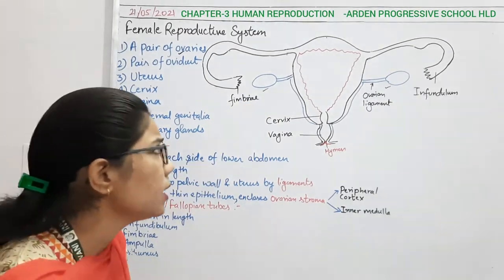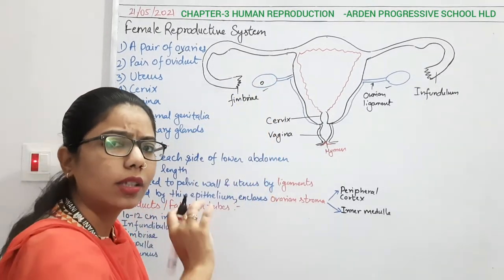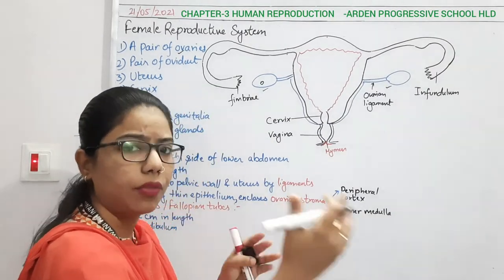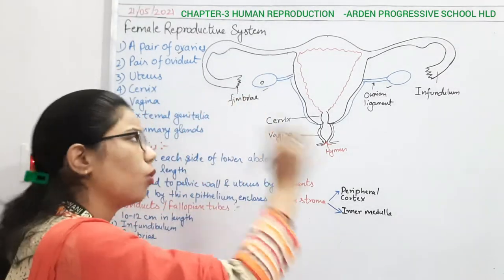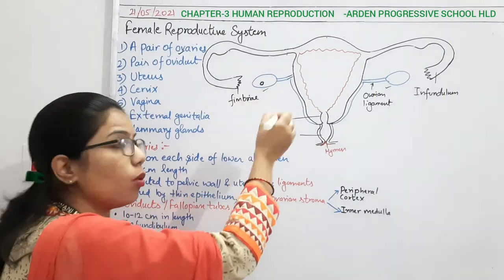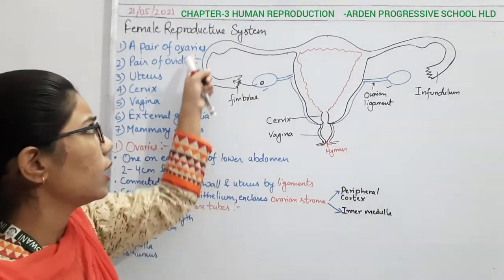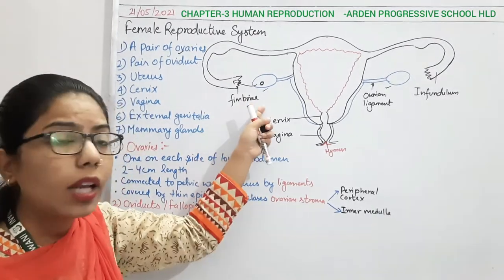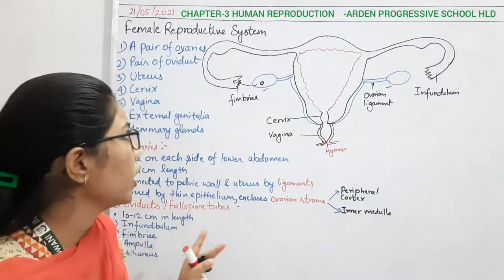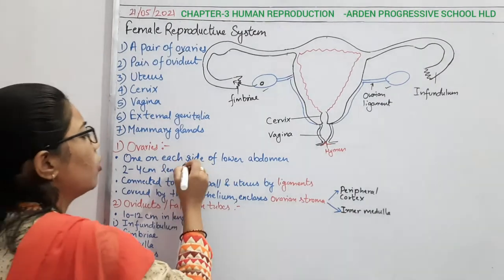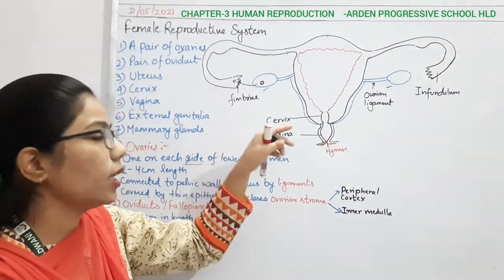The function of the ovary is to form the ovum. Later we will understand what is the menstrual cycle and what are the cyclic changes and different phases. But here the key function of the ovary is forming an ovum. Whatever ovum it forms will move towards the fallopian tube. The ovary is situated one on each side of the lower abdomen.